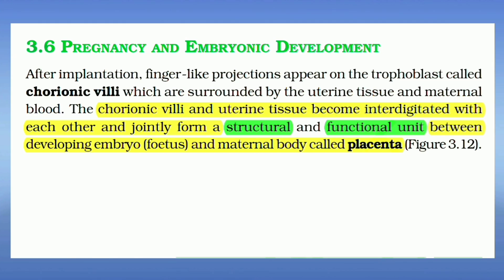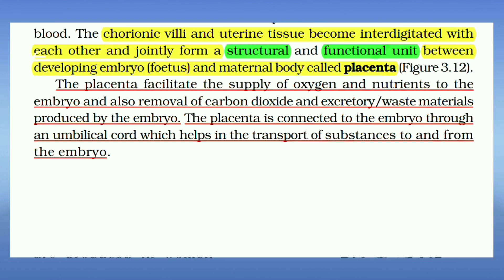Chorionic villi and the uterine tissue become interdigitated with each other and jointly form a structural and functional unit between the developing embryo, foetus, and the maternal body, called the placenta. It facilitates the supply of oxygen and nutrients to the embryo and also the removal of carbon dioxide and secretory waste materials produced by the embryo. The placenta is connected to the embryo through an umbilical cord, which helps in the transport of substances to and from the embryo.